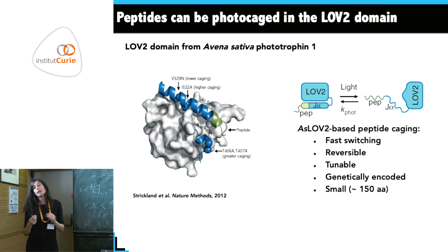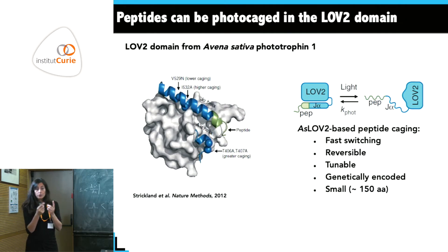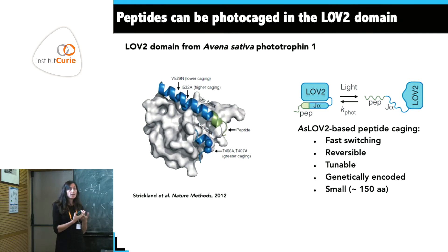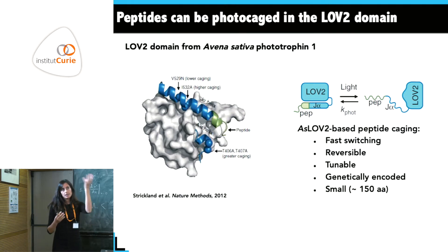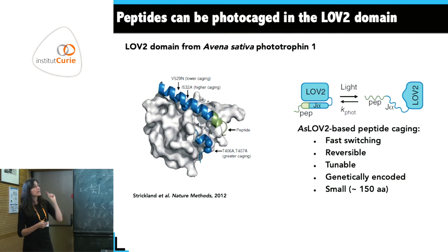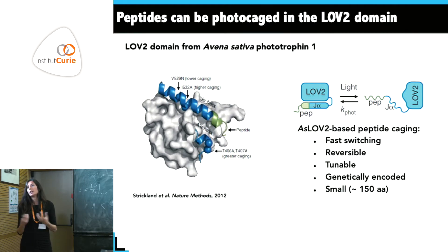The system is also tunable — you can add mutations on the protein around the chromophore. The light-sensitive component is a chromophore; in AS-LOV2 it is a flavin mononucleotide, which is bound to the protein and is where the light reaction occurs.